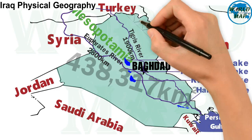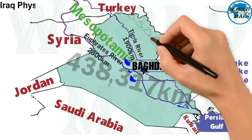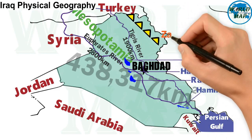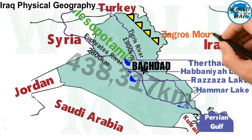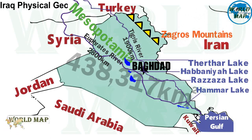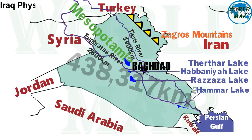Famous mountains and mountain ranges of Iraq: The Zagros mountains are a long mountain range spanning Iran, northern Iraq, and southeastern Turkey, with a total length of 1,600 kilometers (990 miles).